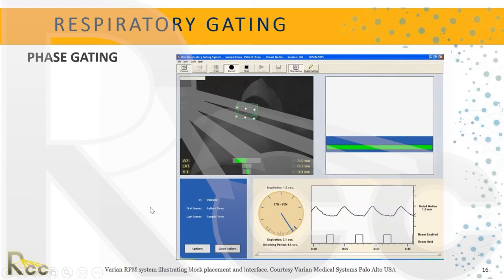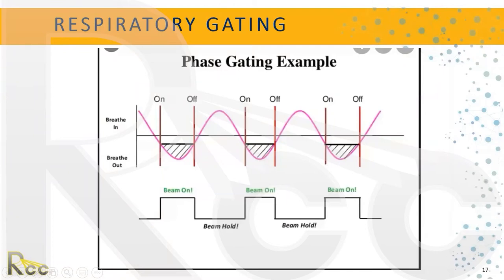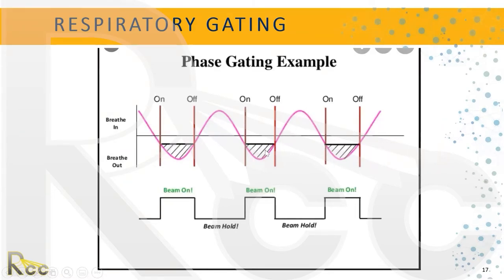When the patient breathes out in expiration, the beam turns on, and then it turns off when they breathe in. We've coached the patient to breathe normally, just as they were captured on their first day of simulation, so we count on them to breathe in that normal fashion. The point is that the beam is on during a certain phase — either breathing in or breathing out — based on what phase was determined at simulation.